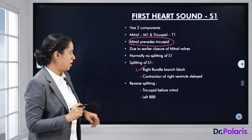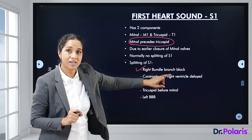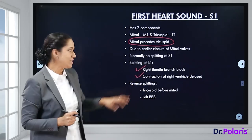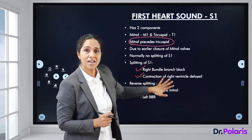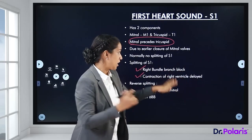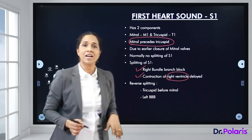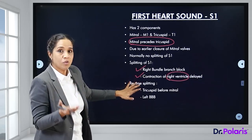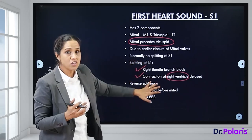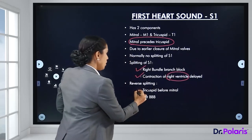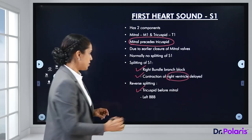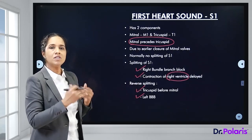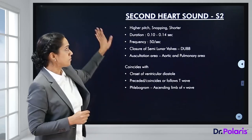S1 coincides with the isovolumetric contraction phase, the peak of the R wave of the ECG, and the onset of the C wave in the JVP (phlebogram). S1 has two components: the mitral component precedes the tricuspid component — because the mitral valve closes earlier than the tricuspid valve. Normally there is no splitting of S1.